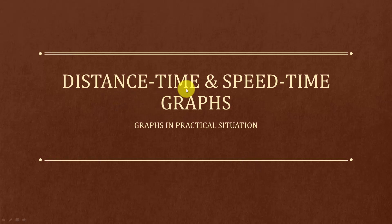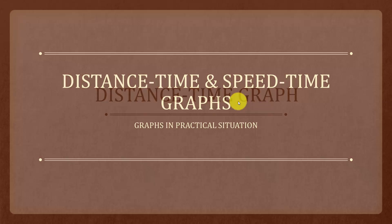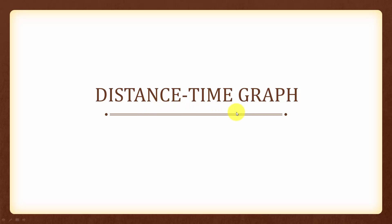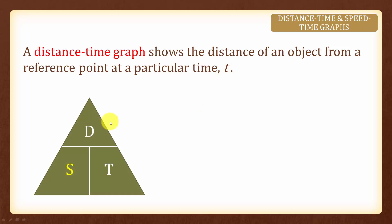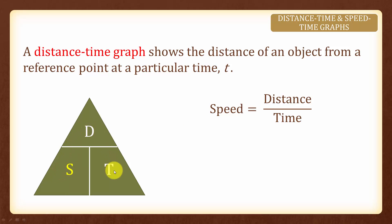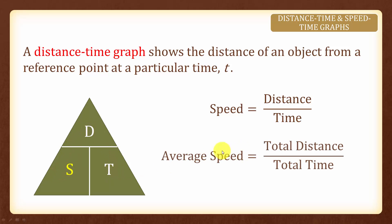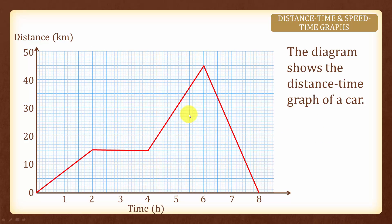In this topic, we are going to learn about distance, time, and speed-time graphs. Let's start off with looking at distance-time graphs. A distance-time graph shows the distance of an object from a reference point at a particular time, t. This triangle here will help us to remember the formula for distance, speed, and time. Speed is equal to distance divided by time, and average speed is equal to total distance divided by total time.